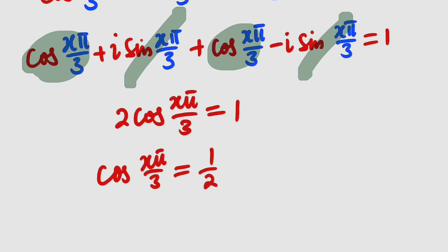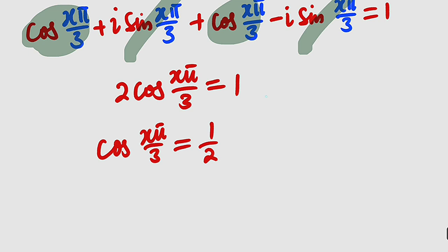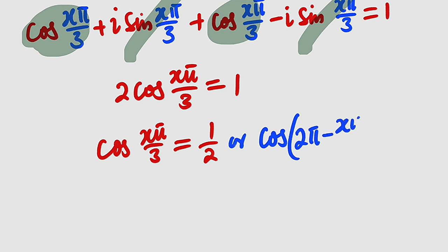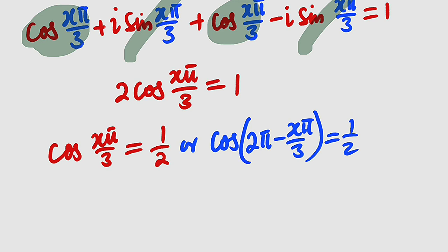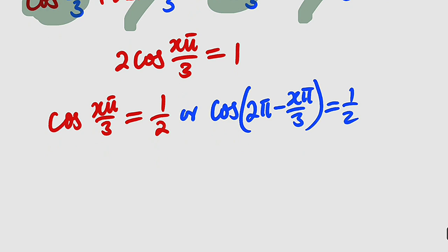Now the question is: on which quadrant is cosine of an angle positive? Cosine is positive in the first and fourth quadrants. So we could have another solution in the form of cosine of 2 pi minus x pi over 3, which is also equal to 1 over 2. So these are the two solutions we are going to obtain. Let us now solve the two equations separately.